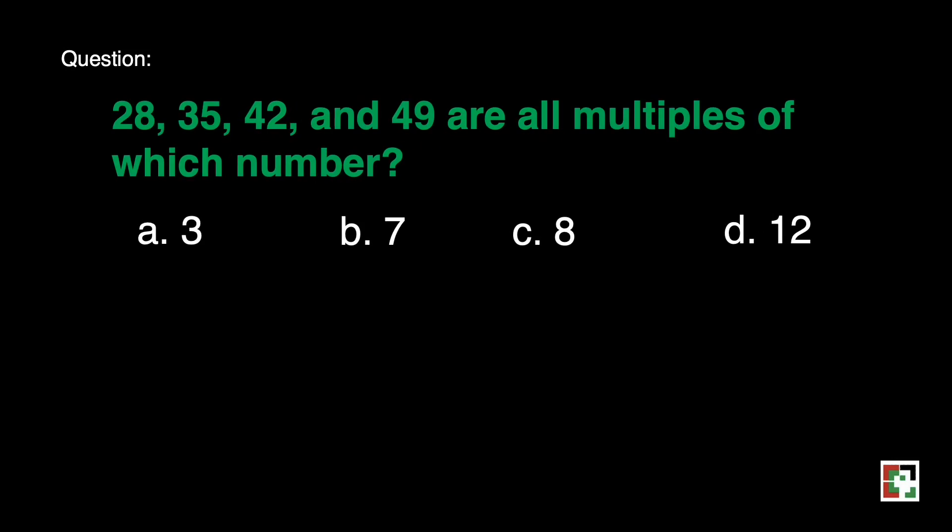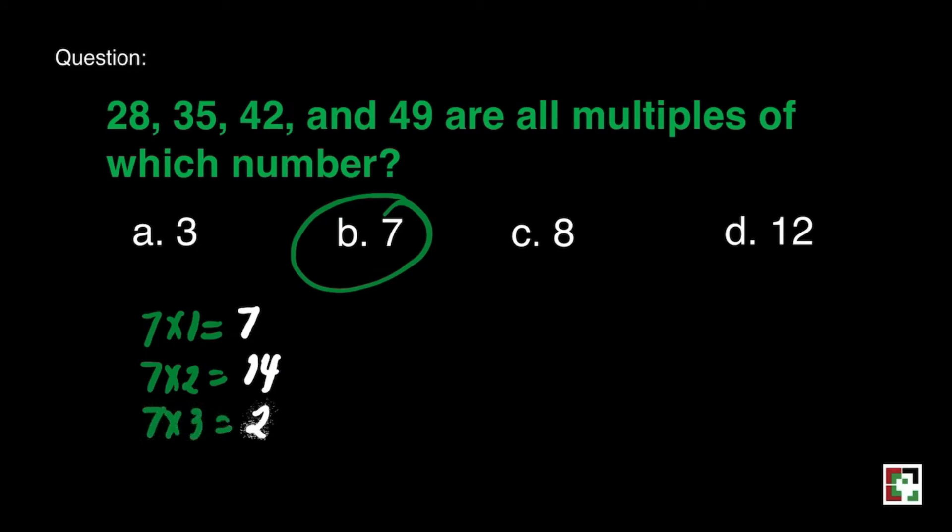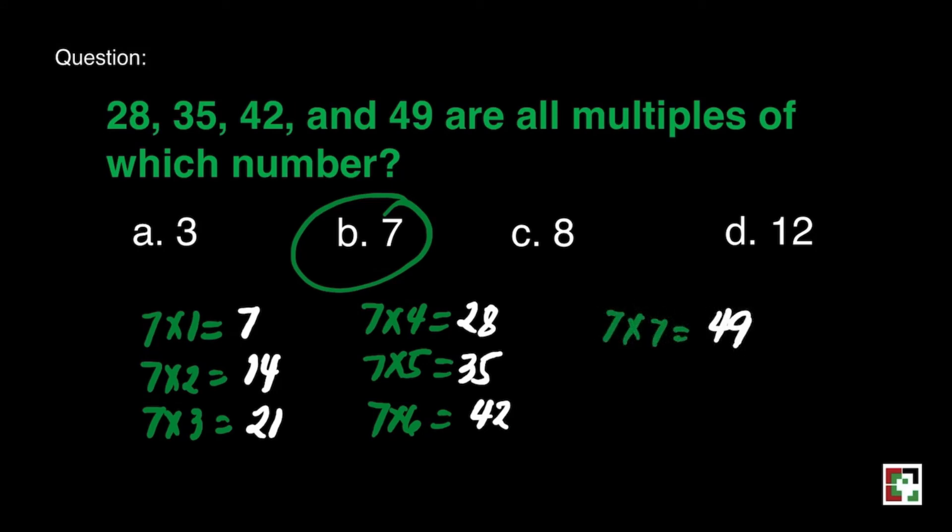Next question. 28, 35, 42, and 49 are all multiples of which number? A, 3. B, 7. C, 8. D, 12. I am sure that the answer here is letter B because 7 times 1 is 7, 7 times 2 is equal to 14, 7 times 3 is equal to 21, and then 7 times 4 is 28, 7 times 5 is equal to 35, and 7 times 6 is equal to 42, and 7 times 7 is equal to 49.